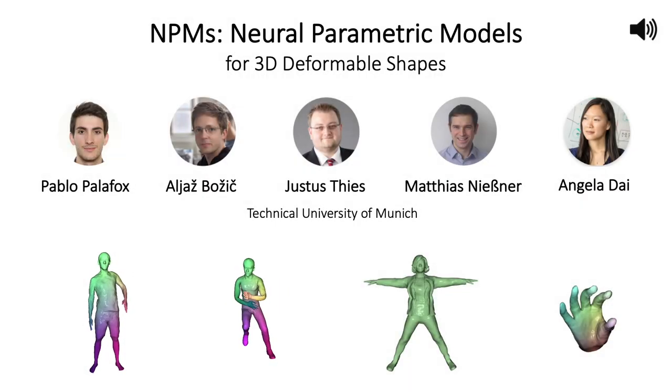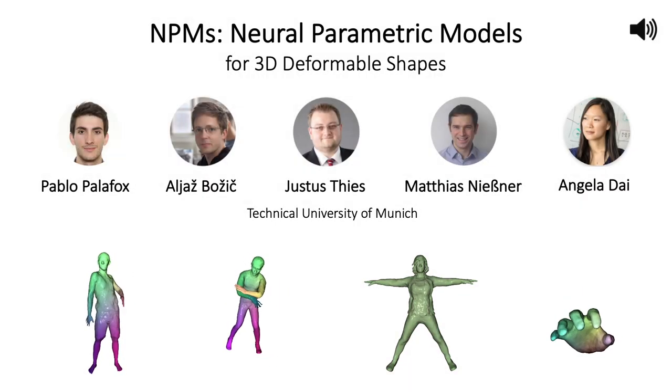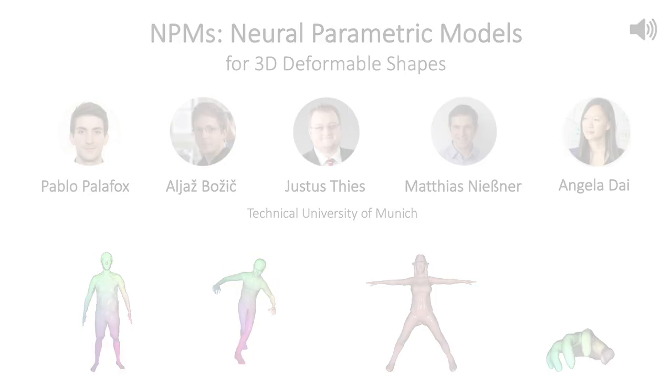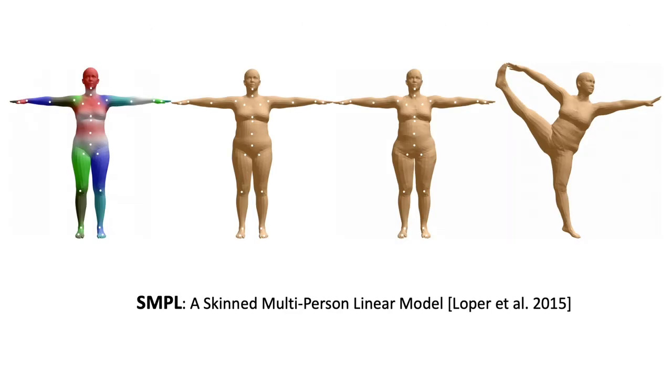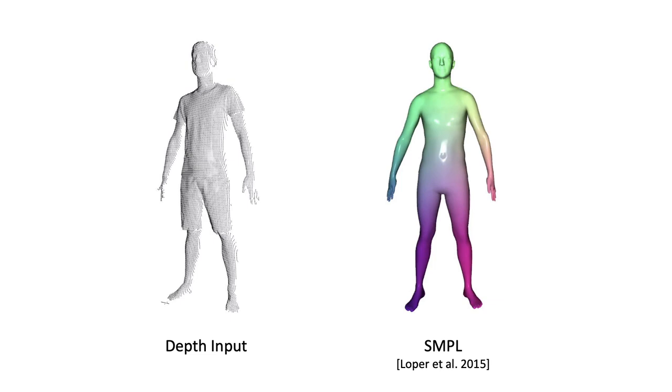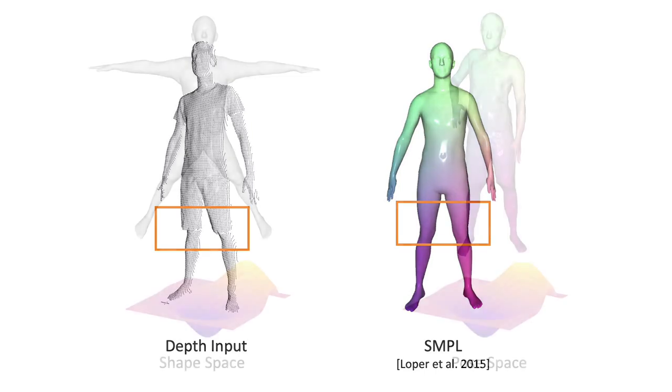We present neural parametric models for 3D deformable shapes. Parametric 3D models, such as SMPL, have enabled a wide variety of tasks in computer graphics and vision. One example application is fitting 3D observations. However, the construction of these parametric models requires heavy manual tweaking, and they struggle to represent additional complexities, such as clothing.